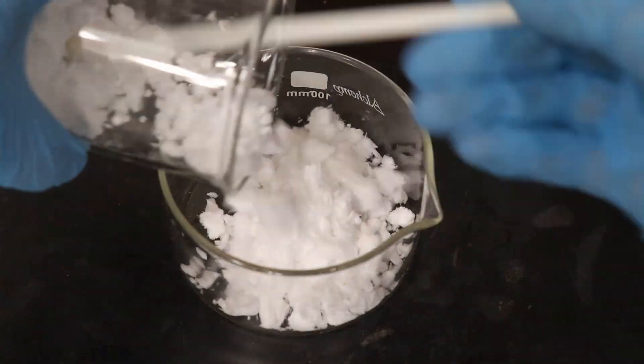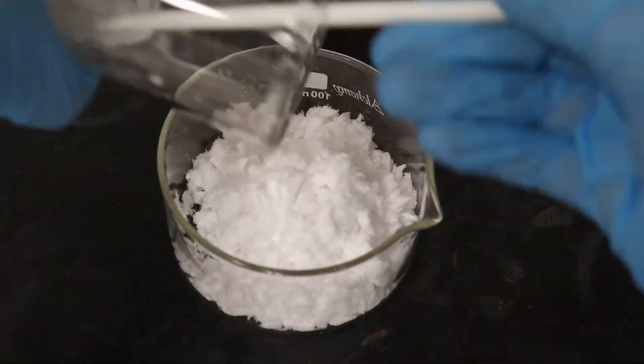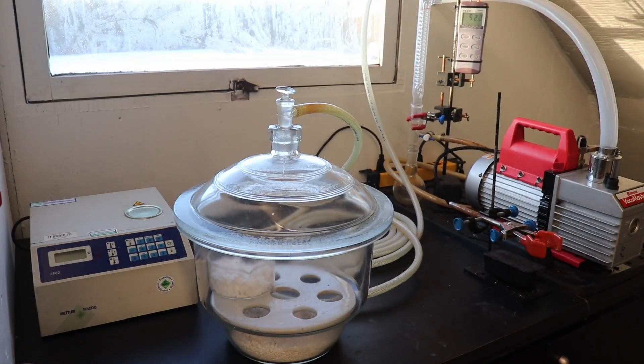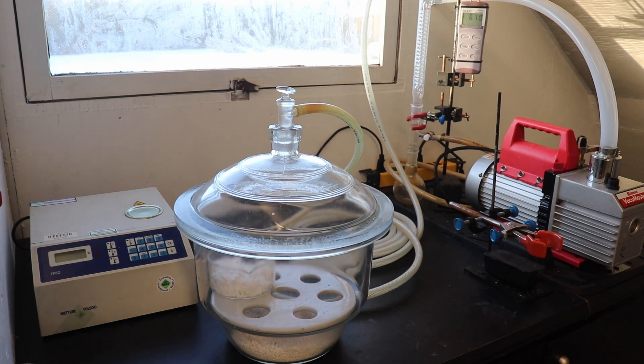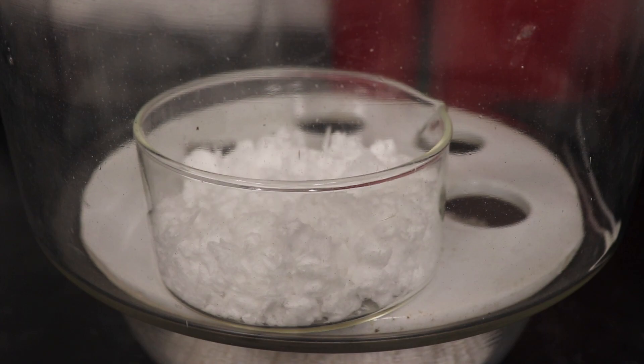The product was then transferred into a crystallizing dish and dried in a vacuum desiccator overnight over calcium chloride. You shouldn't air dry this product as it is an anhydride and is susceptible to hydrolysis from atmospheric moisture.